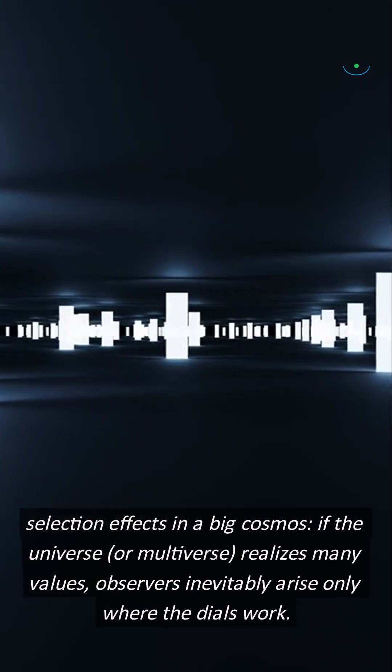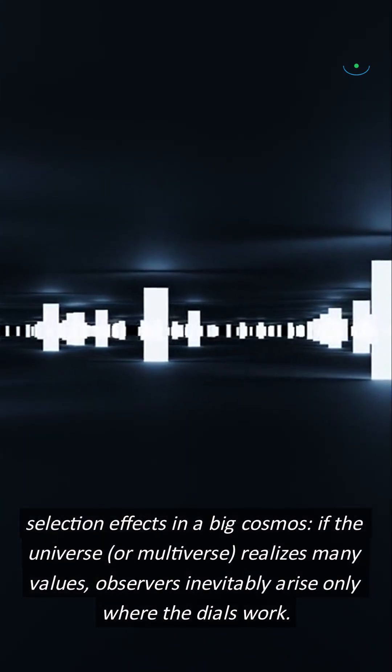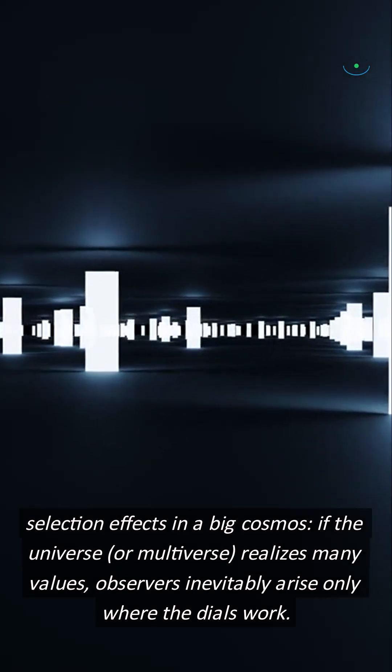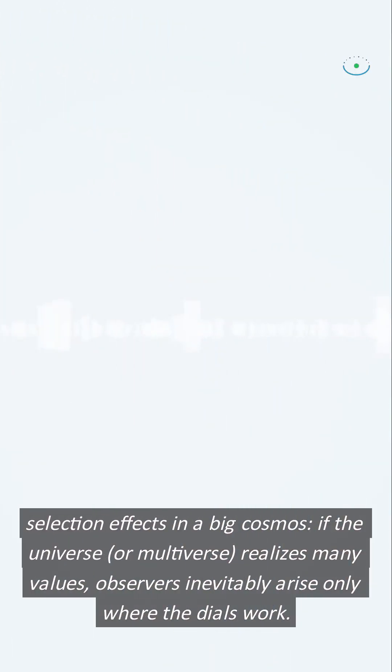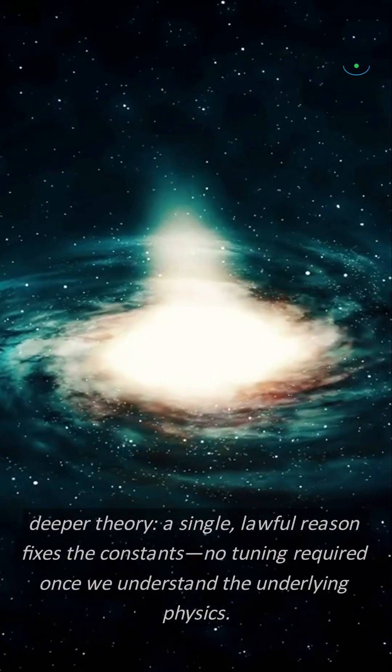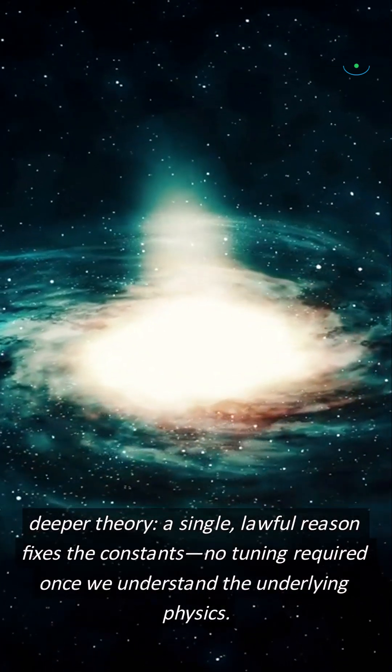Two common answers. Selection effects in a big cosmos. If the universe or multiverse realizes many values, observers inevitably arise only where the dials work. Deeper theory. A single lawful reason fixes the constants. No tuning required once we understand the underlying physics.